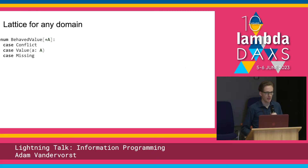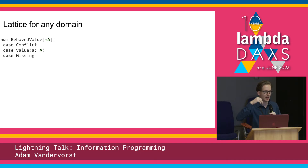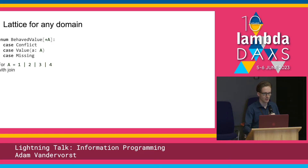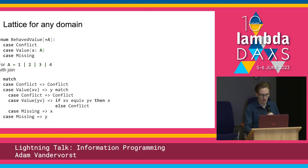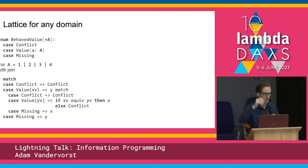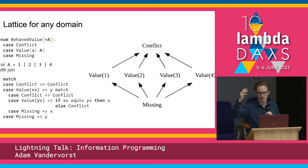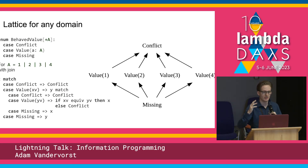Let's start with a lattice for any domain. If we have a type A, we can extend it with a conflict top type for conflicting values, and a missing type. Assuming A is 1 through 4, the join operation works as expected: joining information together only works if the data is equivalent, otherwise it raises up to conflict. In a Hasse diagram, you follow the arrows to know what the result of a join is.